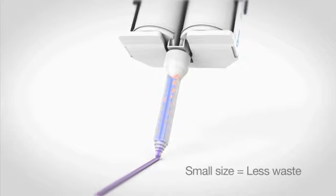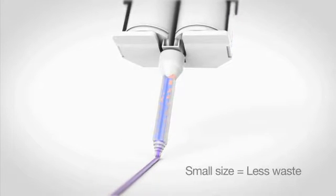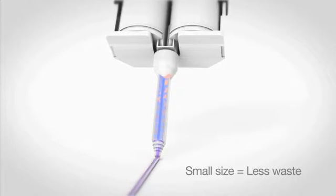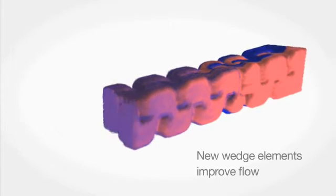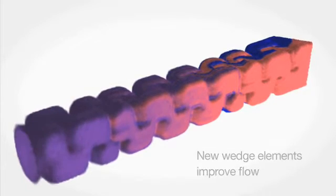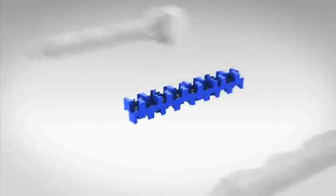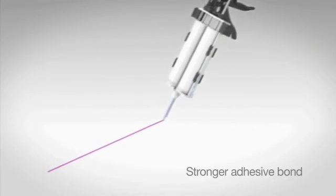OptiMixer's smaller size also means less retained volume, so you cut material waste by up to 30%. Inside the OptiMixer, an innovative new mixing path streamlines material flow, creating a more thorough mix. This creates a stronger adhesive bond in final part assembly.